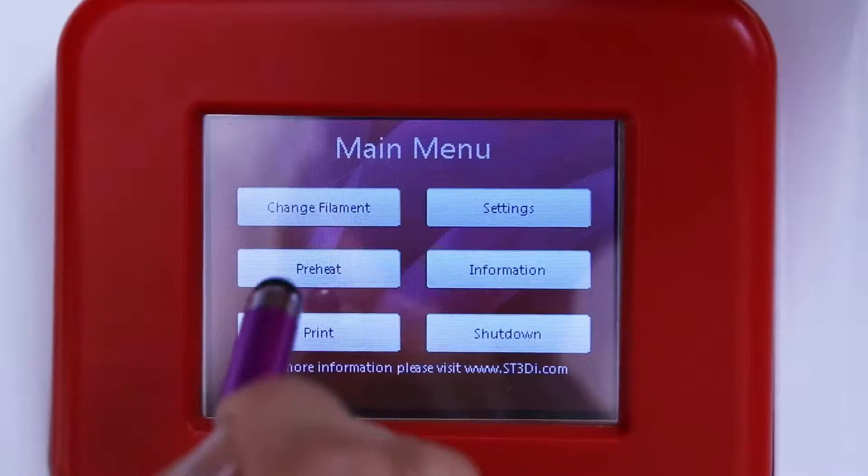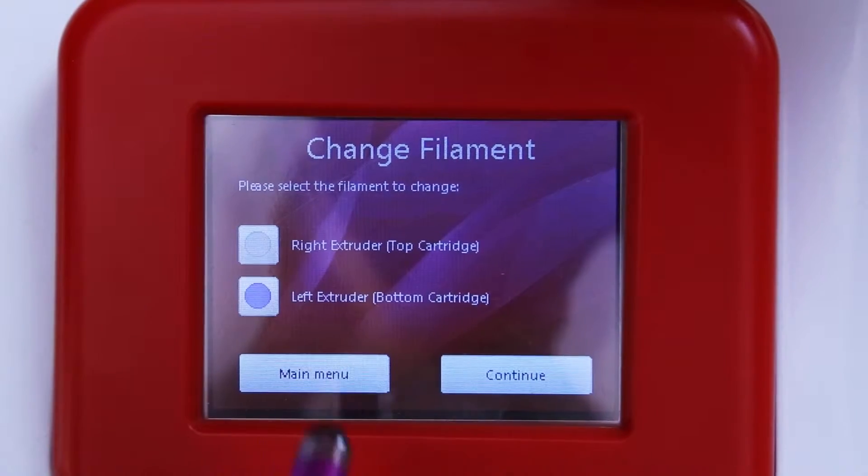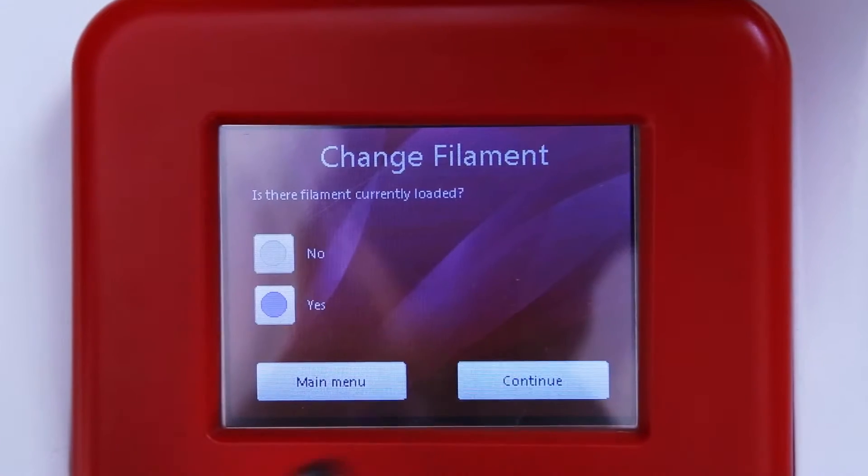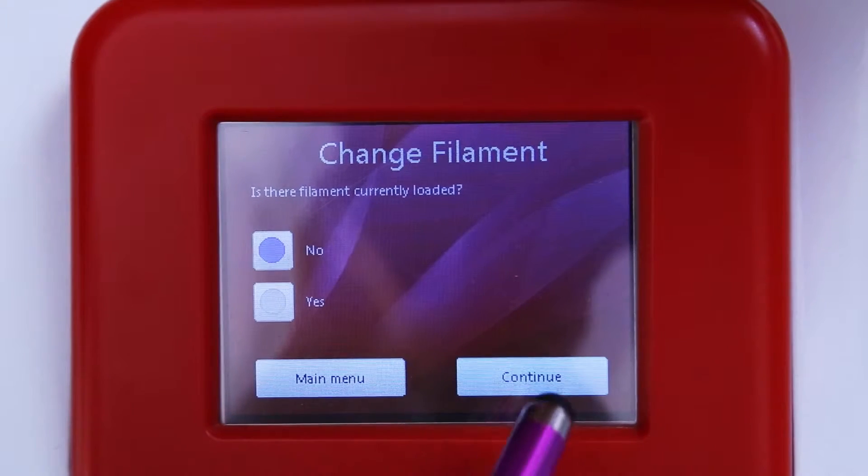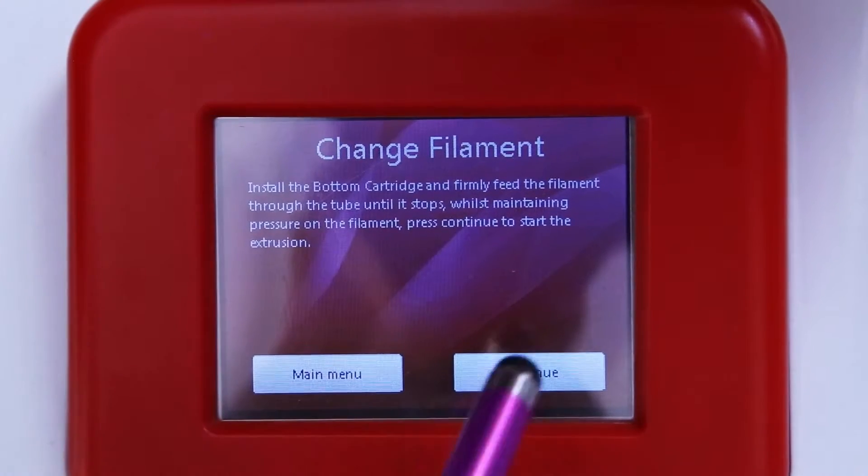First follow the change filament cartridge instructions via the LCD screen. When asked if filament is currently loaded, select no. This will try and extrude a small amount of filament through the nozzle. If you see a straight filament extrusion at this point, then you do not have a filament jam. If nothing extrudes, then follow this process.